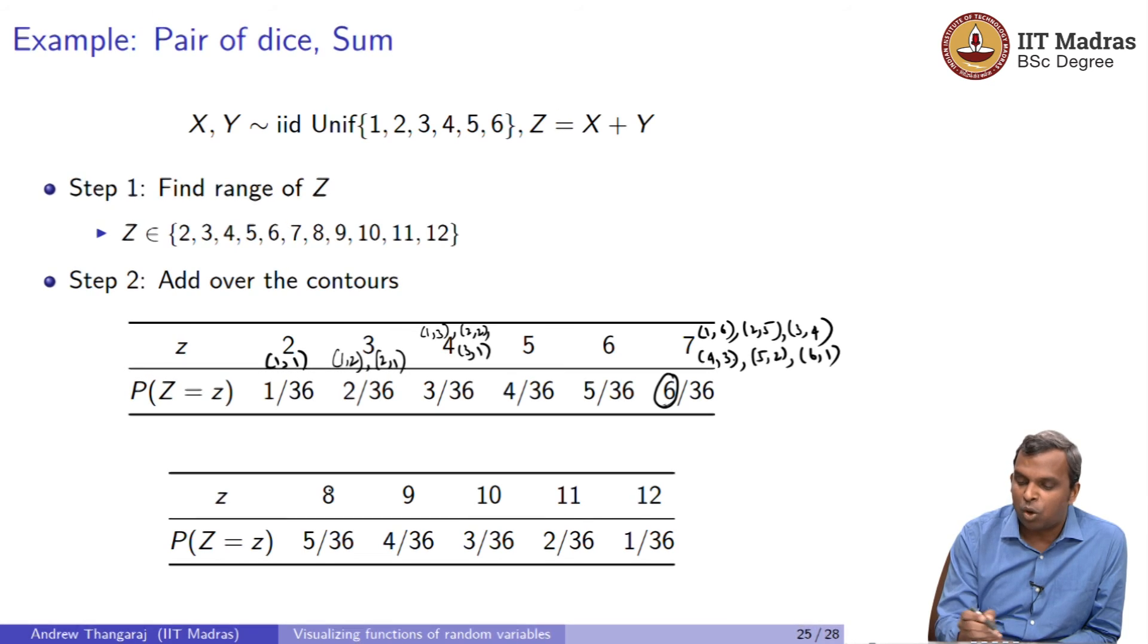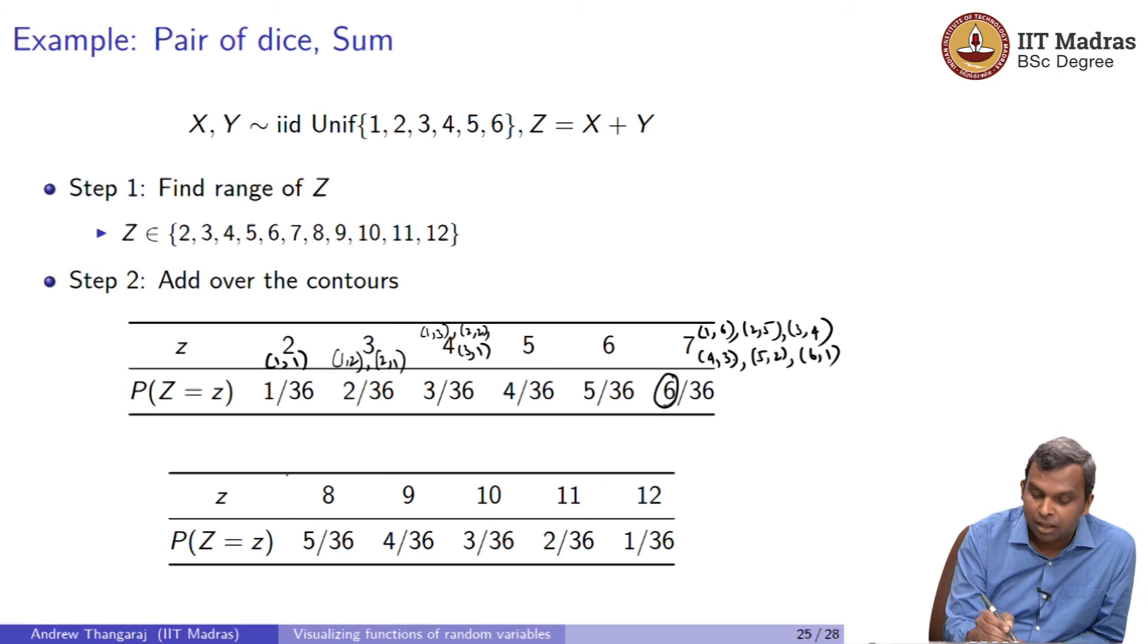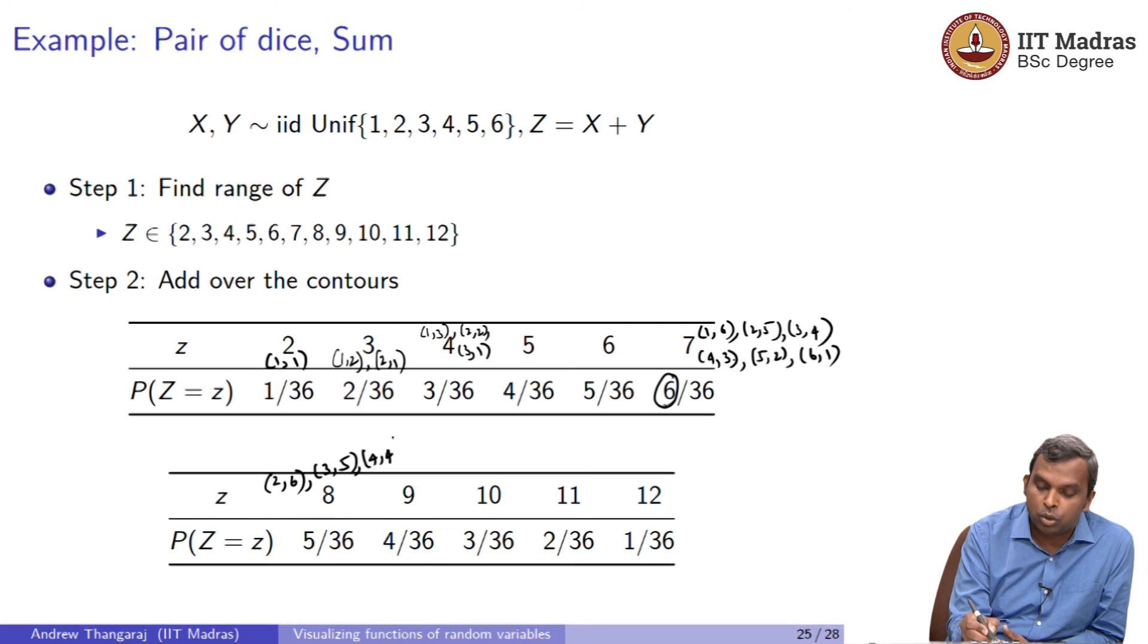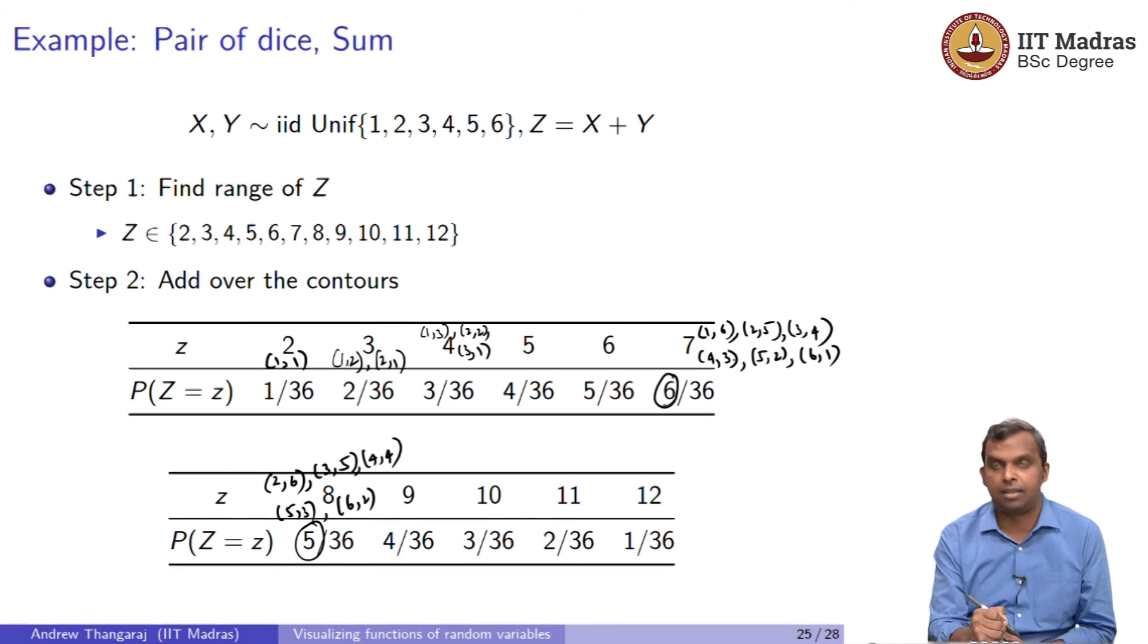Notice what happens when you go to 8. 8 is a little bit tricky. Normally you would say, I am seeing the pattern 1, 2, 3, 4, 5, 6 and then I should go to 7. But it is not going to 7, it is going to 5. Why? Because the maximum is only 6. Notice what happens for 8. For 8 you have to start with 2 at least, 2 comma 6. If one of these values is 1, no way the sum is going to be 8. 1 plus 7 is equal to 8, but 7 cannot occur when you throw a die. So, it has to be 2 comma 6. The number of possibilities has gone down by 1. That gives you 5 out of 36.